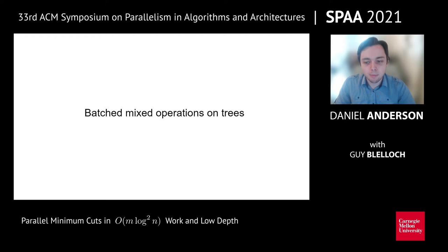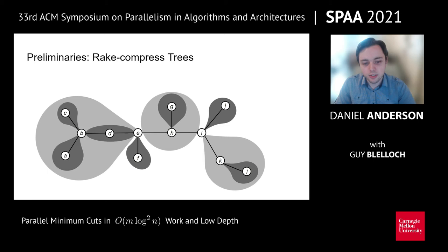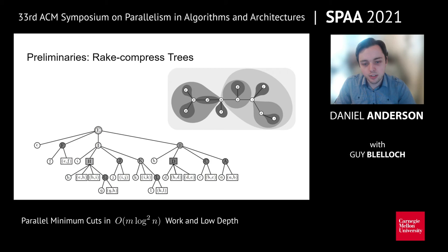We'll now talk about our batched mixed operations on trees framework and some preliminaries. First, rate compressed trees. Rate compressed trees are a way of encoding a recursive clustering on a bounded degree tree. They're based on Miller and Reif's parallel tree contraction technique. Given a parallel tree contraction schedule, we can produce a recursive clustering of the given input tree with at most log n depth. Given the recursive clustering, we arrange the clusters in a tree, where the leaves represent clusters consisting of a single vertex or edge of the original tree, the internal clusters represent the union of the children clusters, and the root cluster represents the entire tree.